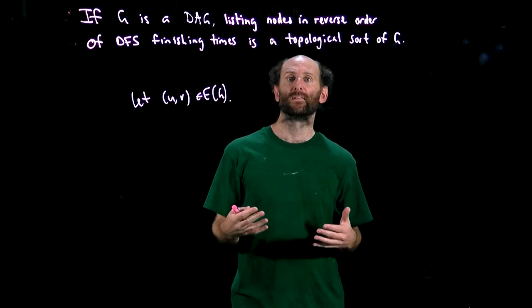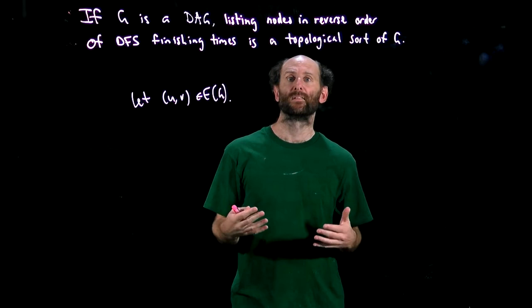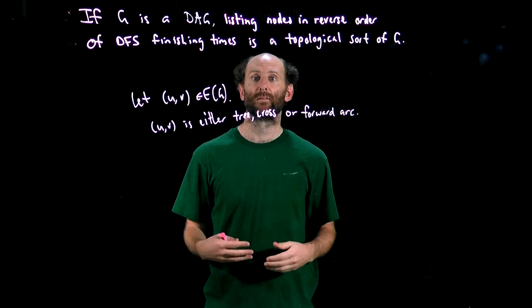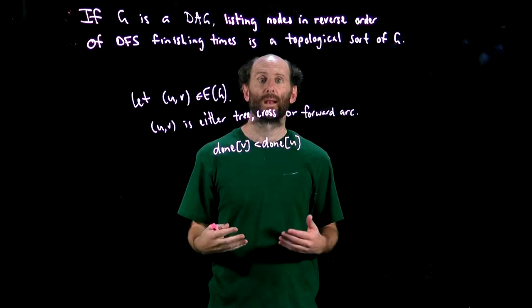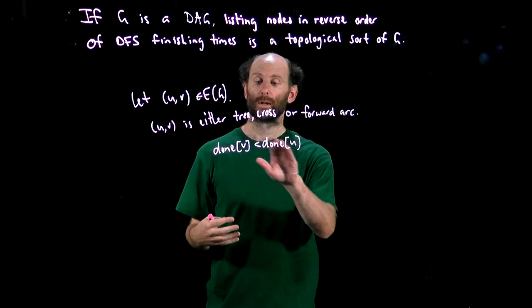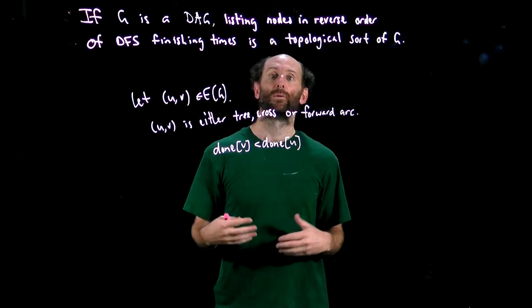So we've just shown that uv is not a back arc since G is acyclic. So there are three cases: it's either a forward arc, a cross arc, or a tree arc. In any of these cases we've shown in the lecture on DFS that done(v) is less than done(u). In the ordering of nodes by reverse order of done times, u comes before v and hence we have a topological order as uv was an arbitrary arc, and that completes the proof.